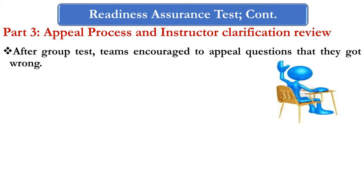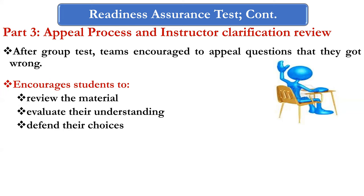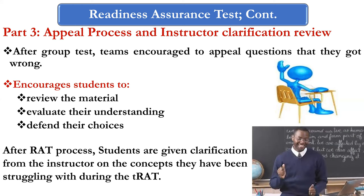The third part is called the appeal process and instructor clarification review. After the group test, teams are encouraged to appeal questions they got wrong, review the material, evaluate their understanding, and defend their choices. After the readiness assurance test process, students are given clarification from the instructors on the concepts they struggled with during the T-RAT.